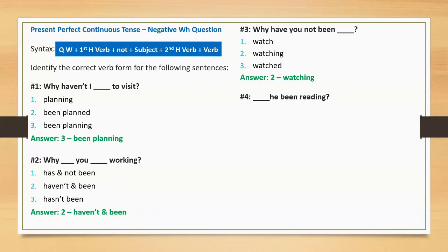Sentence four: 'Blank he been reading?' Option one: why hasn't. Option two: why haven't. Option three: why aren't. Correct answer: option one, why hasn't. Full sentence: 'Why hasn't he been reading?'